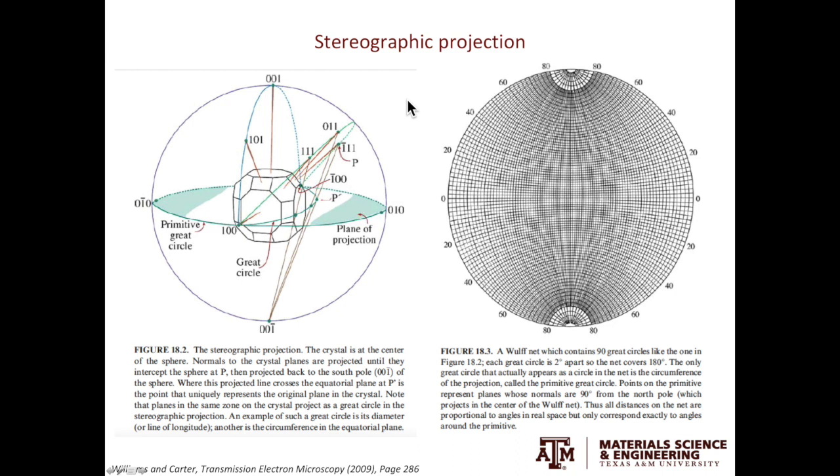Let's use the O11 planes as the example. If we draw the plane normal, the plane normal will intersect the sphere at a point. Now connect this point to the south pole of the sphere. The second line will again intersect with the plane defined by the equator. The intersection represents the O11 plane on the stereographic projection.